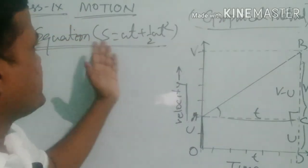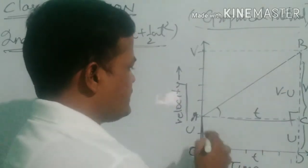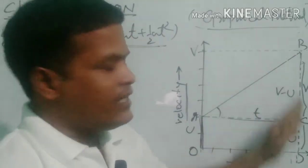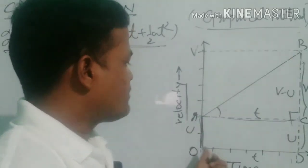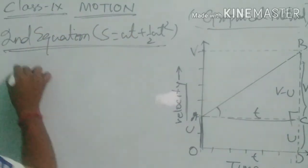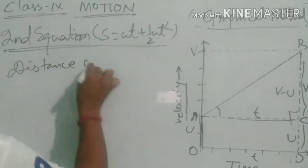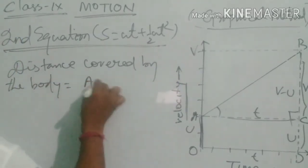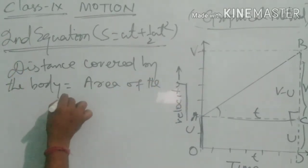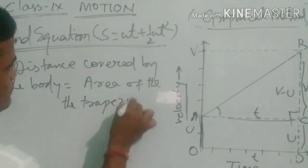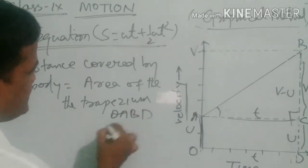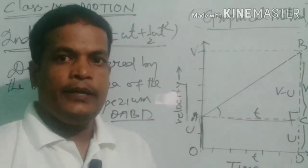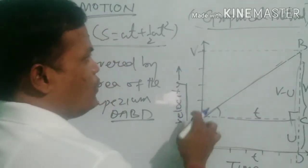In order to find the second equation, s = ut + ½at², we have to find the distance covered by the body in time t. The distance covered by the body equals the area covered by this figure — the area of trapezium OABD. So distance covered by the body equals the area of trapezium OABD.